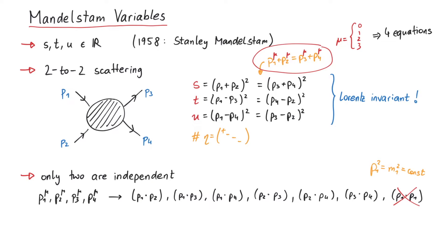Since s, t and u also only contain the momenta and are Lorentz invariant, only two of those can be independent. In fact, one can show that the sum of s plus t plus u is equal to the sum of all squared masses, which is a constant. So if we know for example s and t, u is automatically given by this relation.